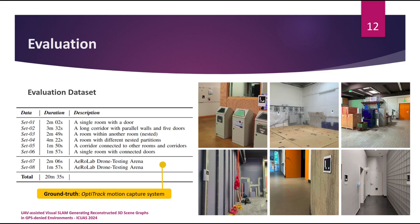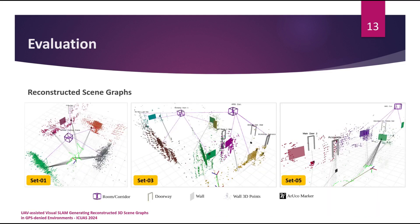It should be noted that ground truth data is only available for experiments conducted in the drone testing arena. For the ground truth, we use the OptiTrack motion capture system to provide accurate pose estimation for the drone. In this slide, you can see some of the reconstructed scene graphs in which the robot has been functioning. The scene graphs are generated and represented in 3D, which are digital twins of the environments in which the drone was flying. Semantic information such as the labels of rooms and names of doorways has been achieved with the help of fiducial markers. To prepare the environment, we place fiducial markers on the doorways, and a dictionary of marker IDs placed on doors or walls is fed to the system.